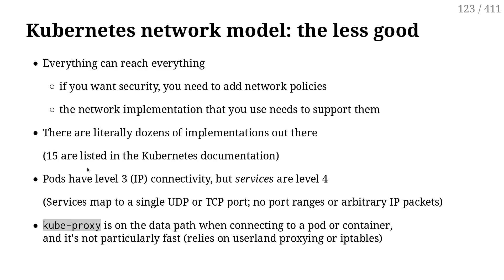This contrasts with other approaches where each application gets its own network, and by default networks can't communicate — they are airtight and you don't have to worry about adding network policies. Another downside is that since it's so flexible and we can use anything, there are literally dozens of ways to implement networking with Kubernetes.